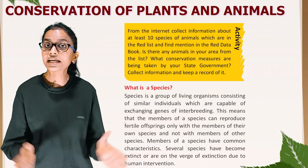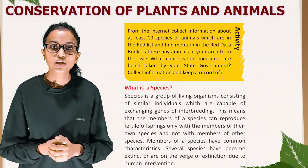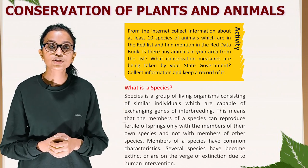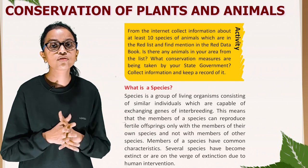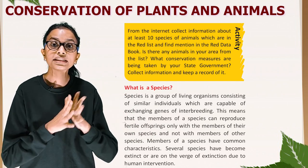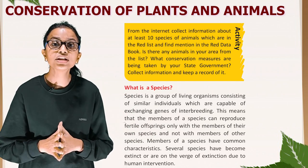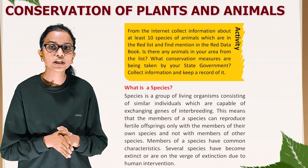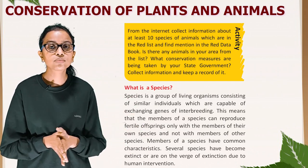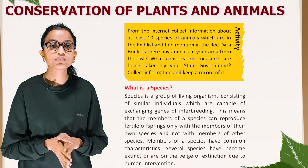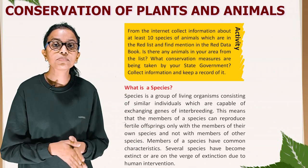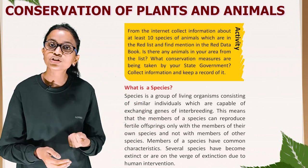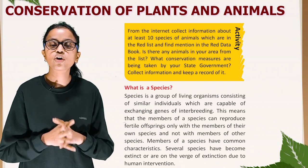Activity: from the internet, collect information about at least 10 species of animals which are in the red list and mentioned in the red data book. Is there any animal in your area from the list? What conservation measures are being taken by a state government? Collect information and keep a record of it.